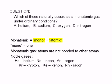The family of elements that fits this description is known as the noble gases. Members of this family include helium, neon, argon, krypton, xenon, and radon.